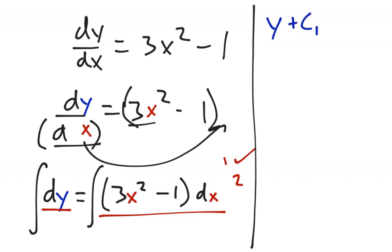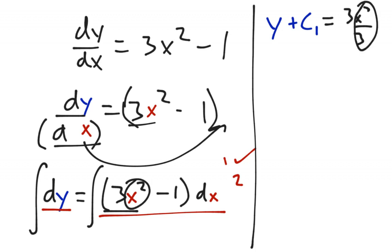Then I have equals — use the power rule. 3x squared is going to be 3x cubed over 3, because the antiderivative of x squared is x cubed over 3. But those 3's will cancel, so I'm going to end up writing it as just x cubed.